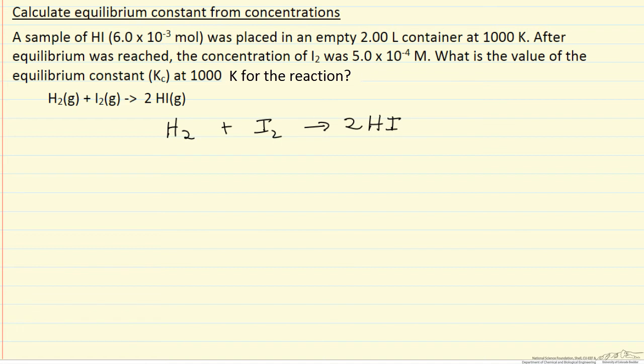I start with 6.0 × 10⁻³ moles and no moles of these species, and then reaction takes place. Let me use x to indicate how much iodine and hydrogen forms. In other words, 2 moles of HI react and I'll get 1 mole of hydrogen and 1 mole of iodine.